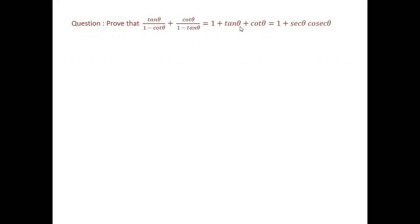The question is: tan θ upon (1 minus cot θ) plus cot θ upon (1 minus tan θ) is equal to 1 plus tan θ plus cot θ. It could also be proved as equal to 1 plus sec θ cosec θ. So it is actually two questions merged into one — it could be asked in either form. Let us see how to solve this.